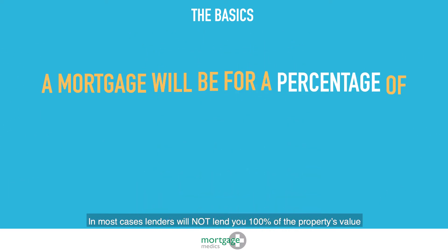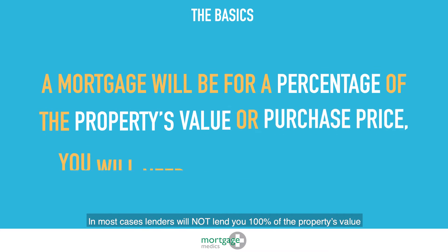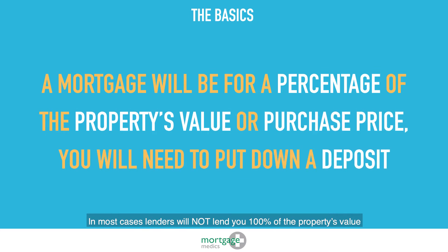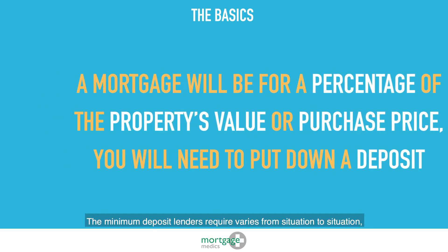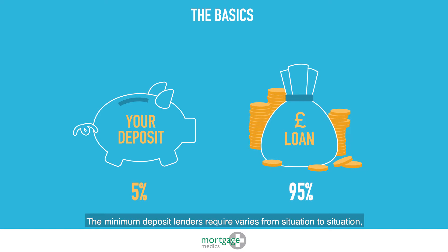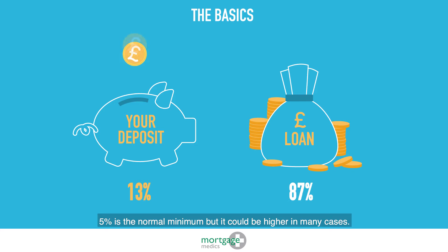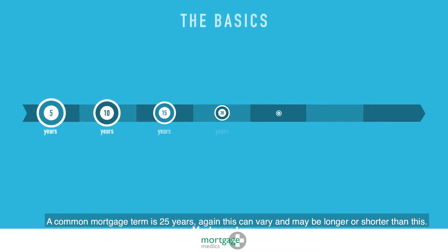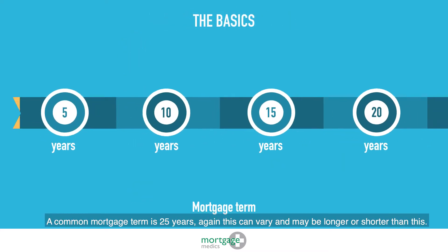In most cases lenders will not lend you 100% of the property's value. You will need to put down a deposit and the lender will lend the rest. The minimum deposit lenders require varies from situation to situation — 5% is the normal minimum, but it could be higher in many cases.